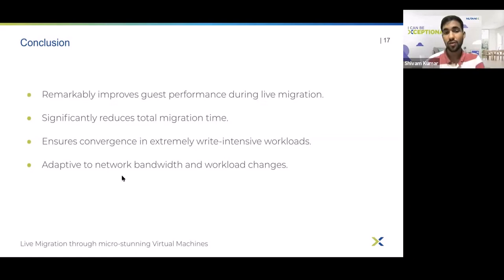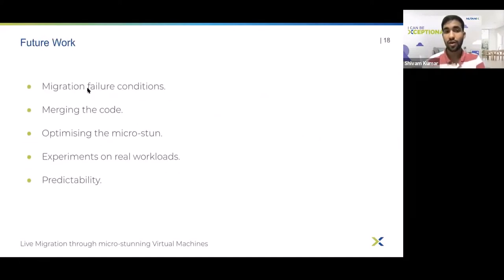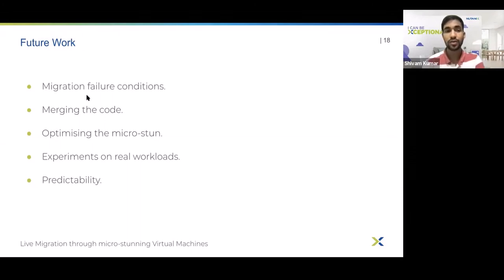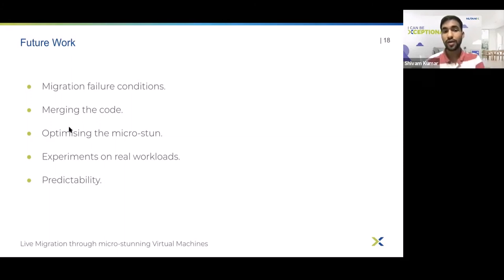While the current scheme only takes a decision after the current migration iteration is finished. Talking about the future, we are working on experiments to find the right migration failure conditions so that we can converge the migration in as many cases as possible without terribly affecting guest performance. On the implementation side, we'll be sending our patches to the open source community for review. We are also running experiments to find the right window size to micro-stun the VM optimally — the idea is to stun the VM in microscopic time windows so that only write-intensive processes feel that CPU time is being stolen from them.